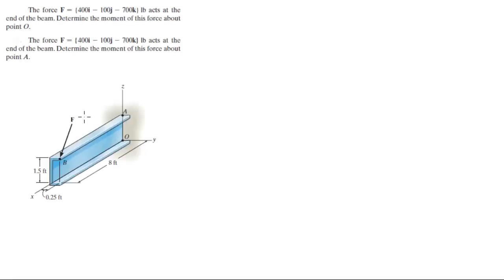For more videos, visit ForTheSakeOfEducation.com. Alright guys, let's do this problem in which I want you to find the moment that the force F creates about O and about A. To do the first part — the moment that F creates about O — you need to find the vector that goes from O to point B. So we find all the points involved first, which are O, A, and B.